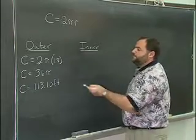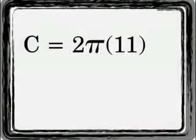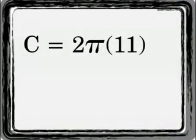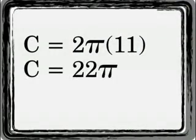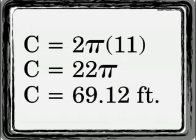My circle had the following circumference: 2 times pi times 11 feet. This turns out to be 22 pi, and this calculation turns out to be 69.12 feet.